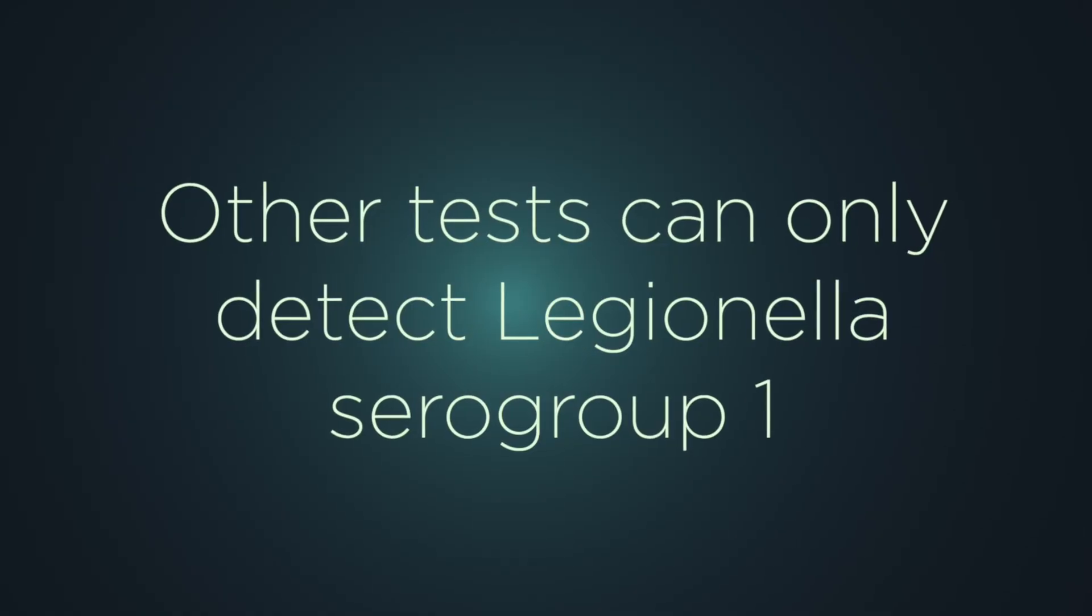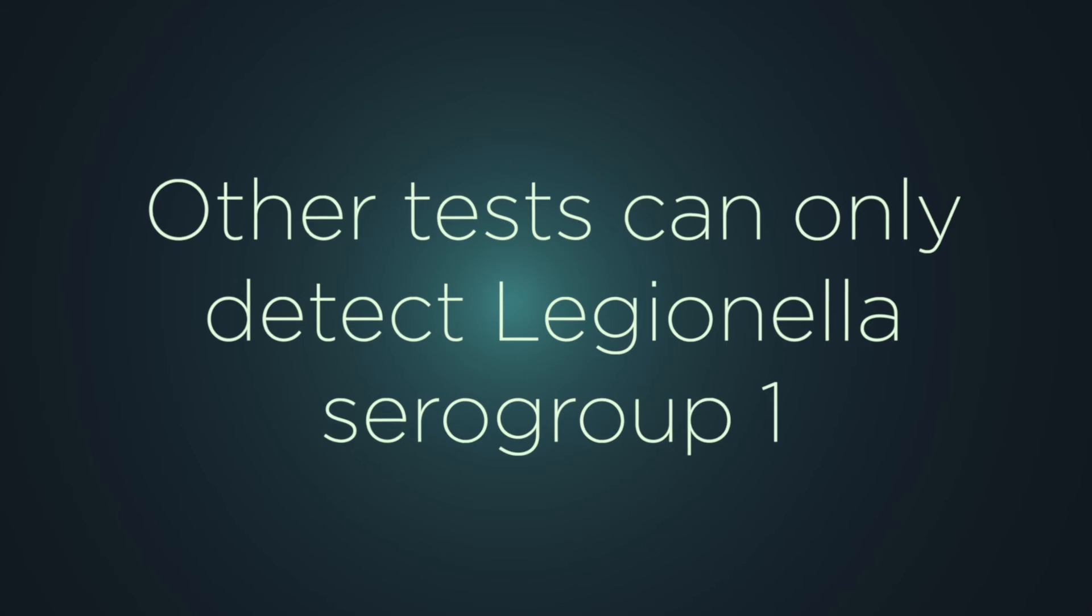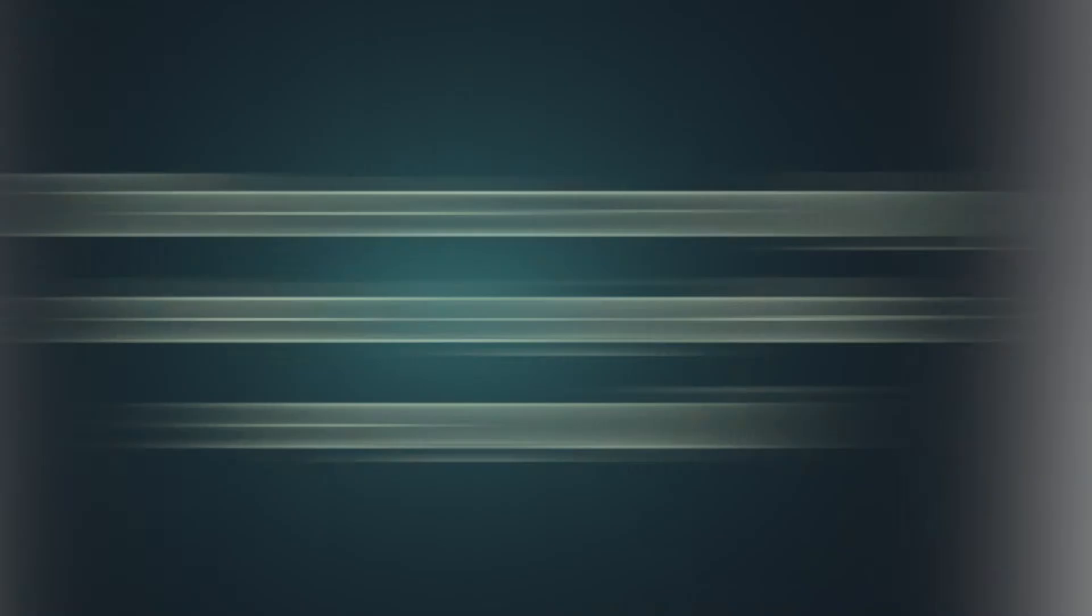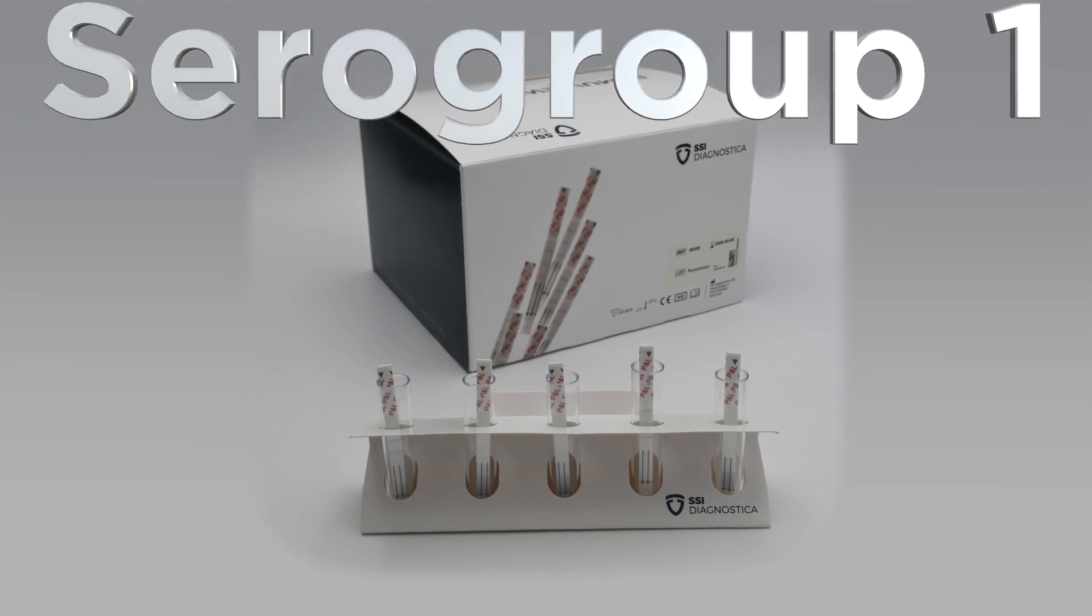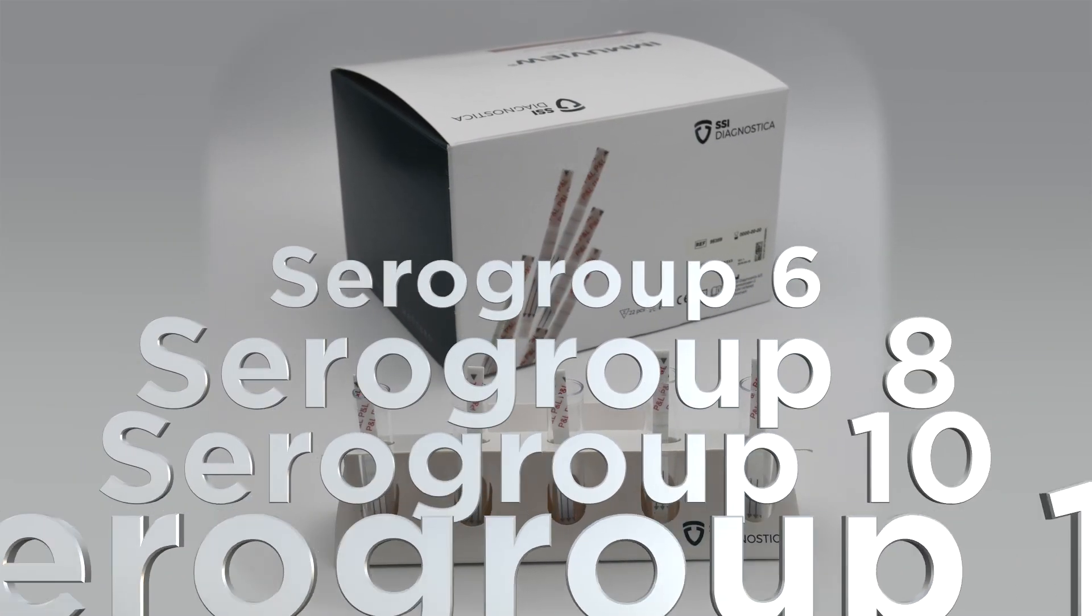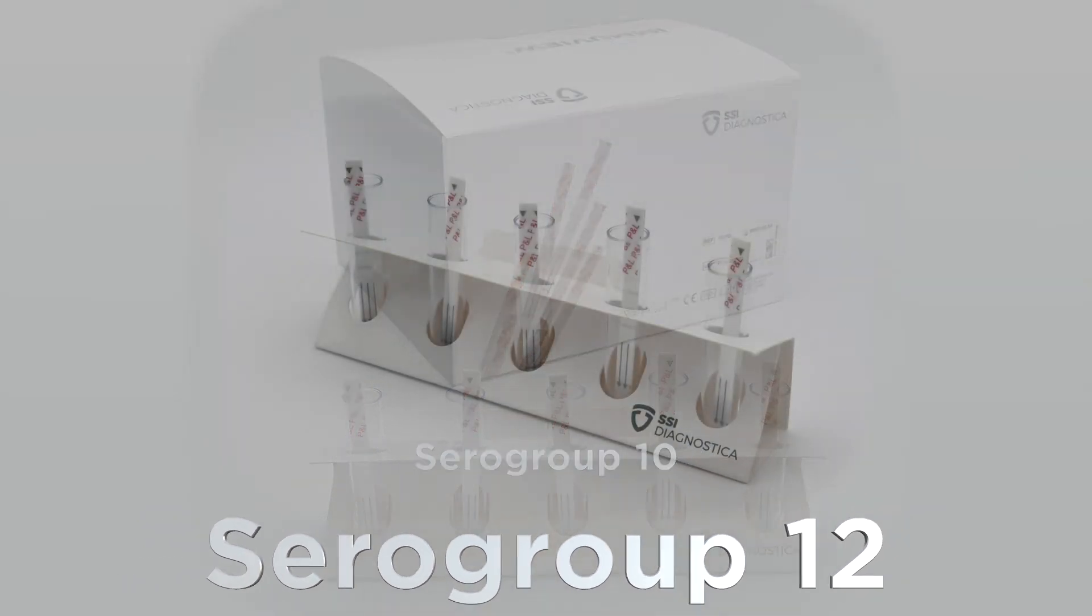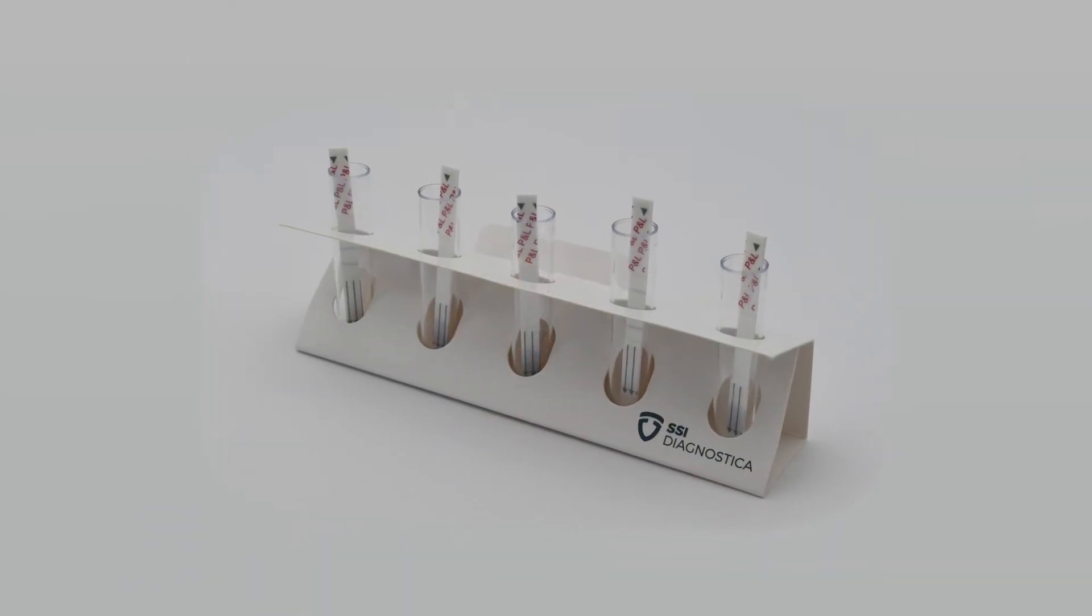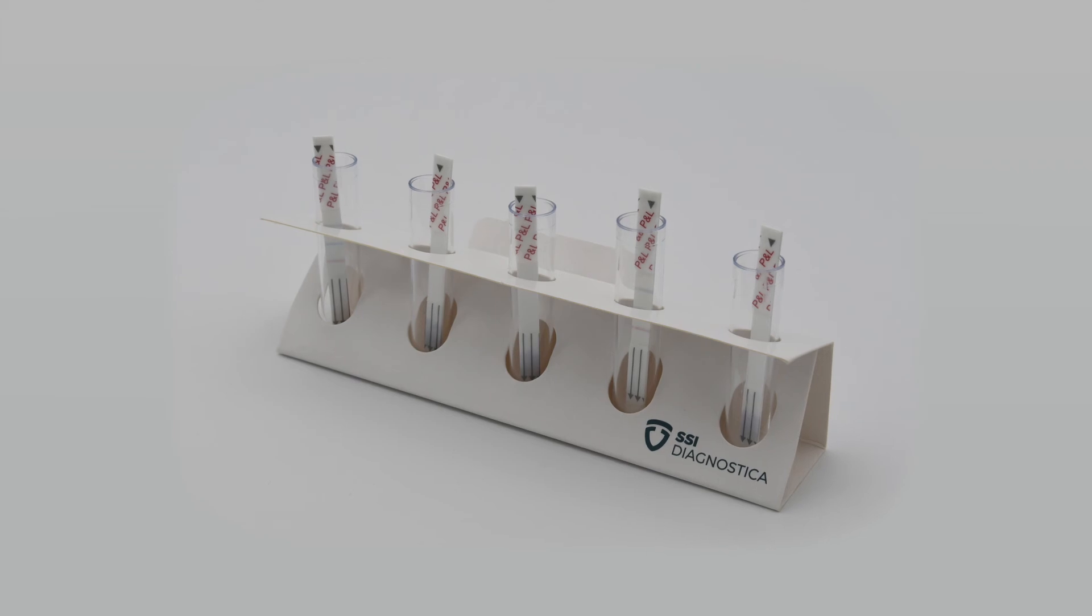Additionally, other tests can only detect Legionella serogroup 1, whereas ImmuView detects serogroups 1, 3, 6, 8, 10, and 12. Finally, the two-in-one ImmuView has a smaller footprint than other tests, saving precious lab bench space.